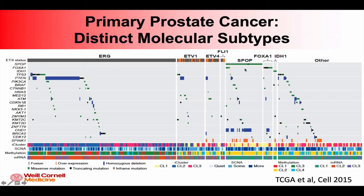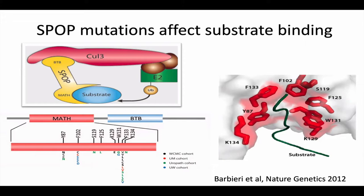In terms of what SPOP is and what it does: the SPOP gene encodes the substrate recognition component of an E3 ubiquitin ligase complex. It's comprised of two functional domains — a MATH domain, which actually binds to substrates, and a BTB domain, which interacts with the Cullin-3 core. Together, they promote the ubiquitin tagging of substrates and commonly their degradation. In prostate cancer, where the mutations happen in this protein, they're all in the substrate recognition domain or MATH domain, all at specific hotspot amino acids, and all very tightly clustered around the substrate binding cleft, indicating these will affect substrate specificity.